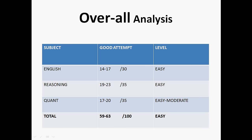Here you can see on the screen, in English if you have attempted around 14 to 17 questions then it is a good attempt, and level of English was easy. In reasoning, around 19 to 23 attempts are good. In quant, around 17 to 20 attempts are good. Total attempts, if you have attempted around 59 to 63 questions then it is a good attempt.